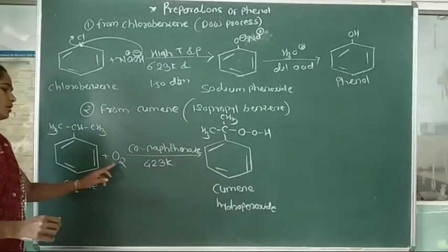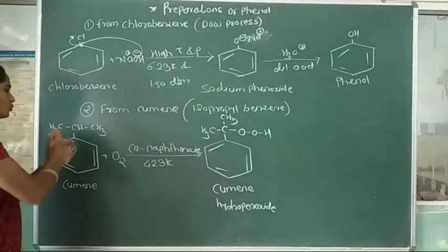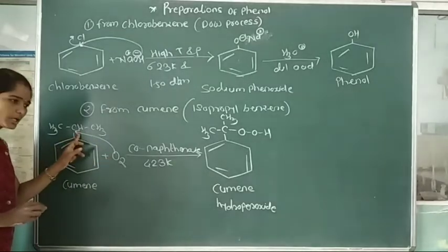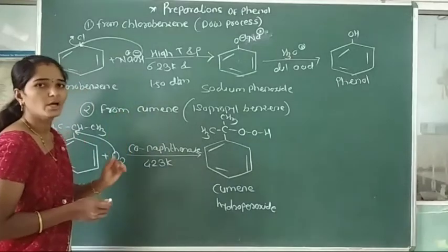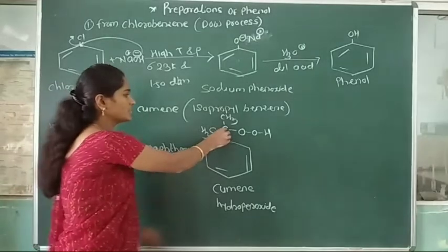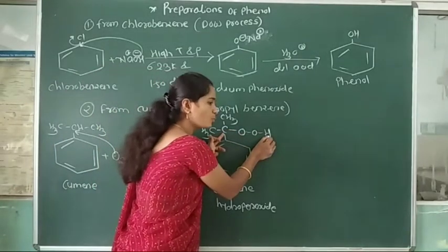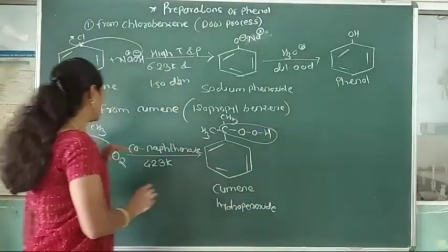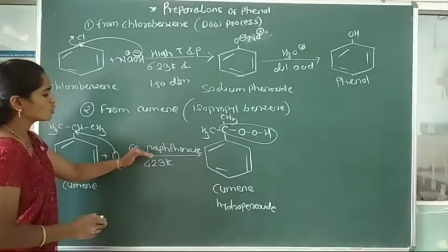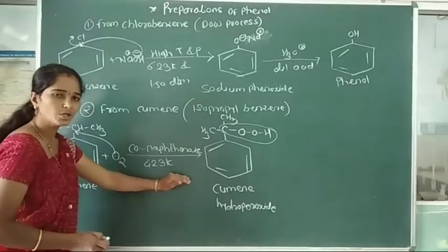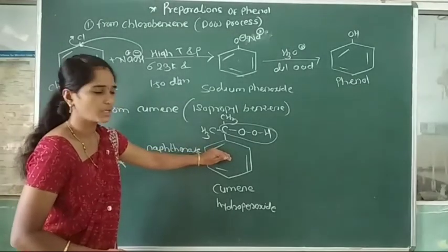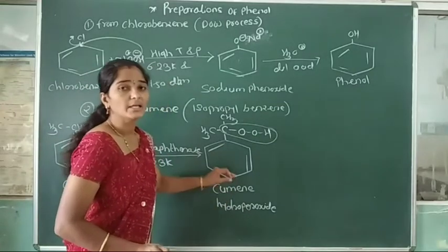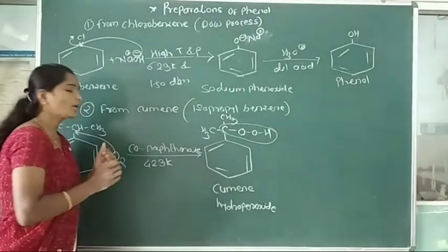In the air oxidation reaction, oxygen adds into the tertiary carbon of cumene to form the hydroperoxide group (—OOH). This carbon then forms a C—O—O—H linkage, which is called a hydroperoxide. Cumene reacts with oxygen in the presence of cobalt and naphthalene at 423 K to form cumene hydroperoxide. This is an oxidation reaction.